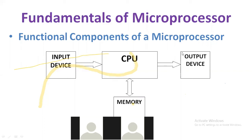The results are generated and shown on output devices such as monitor, LED display, seven-segment display, or LCD display. This is how the functional components of a microprocessor work together.